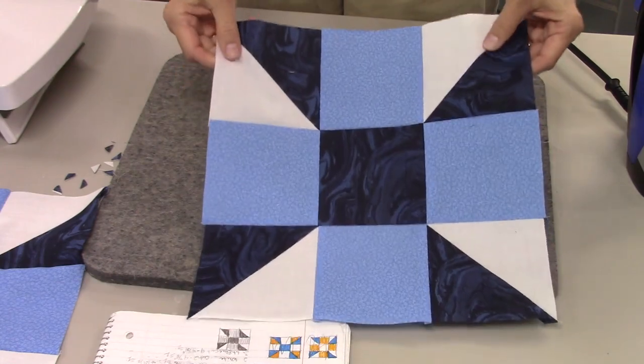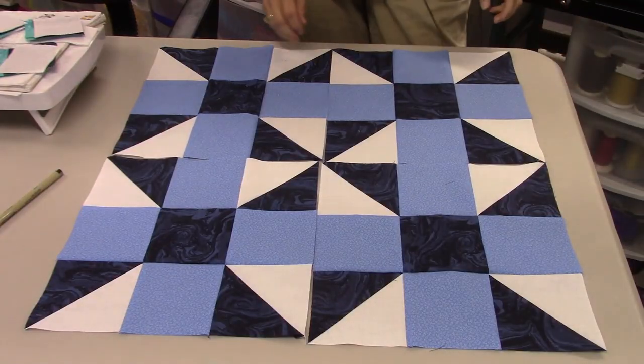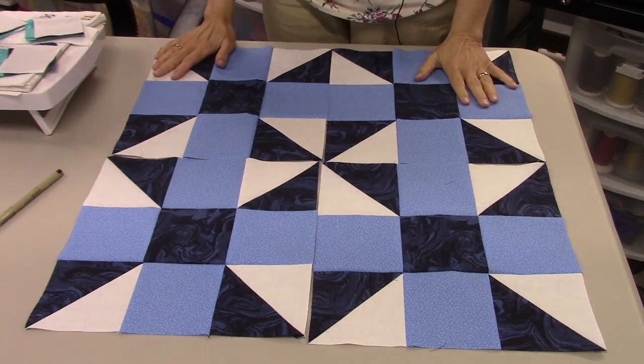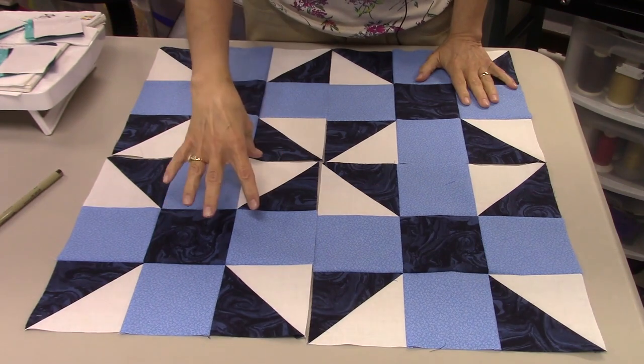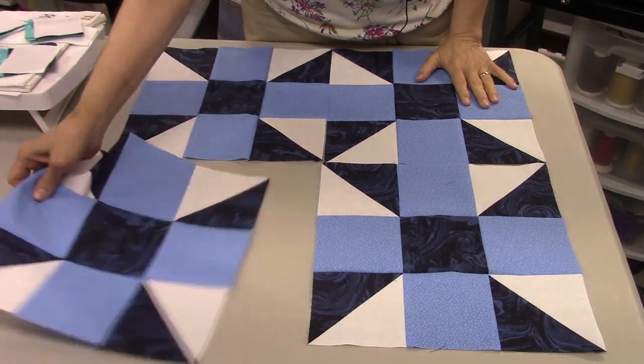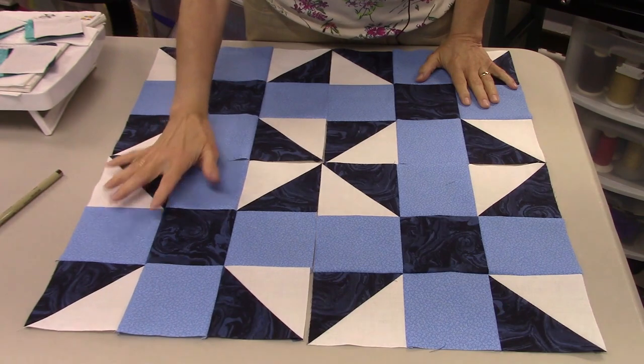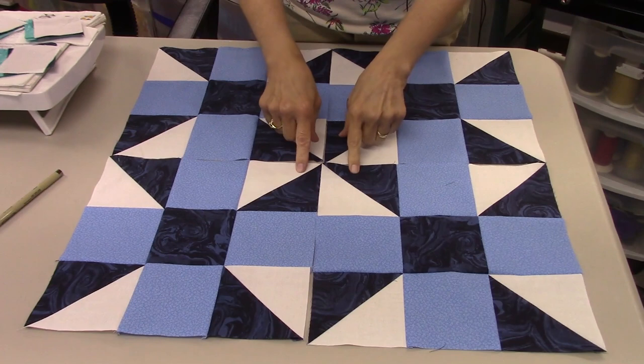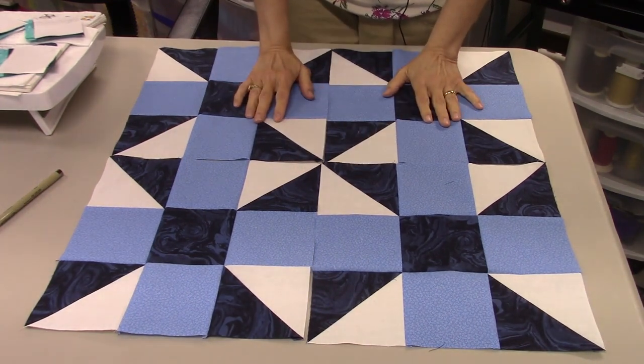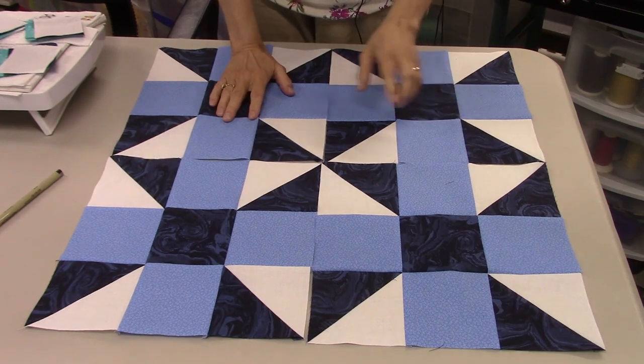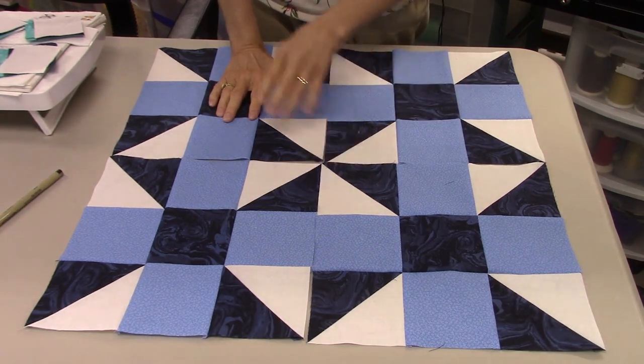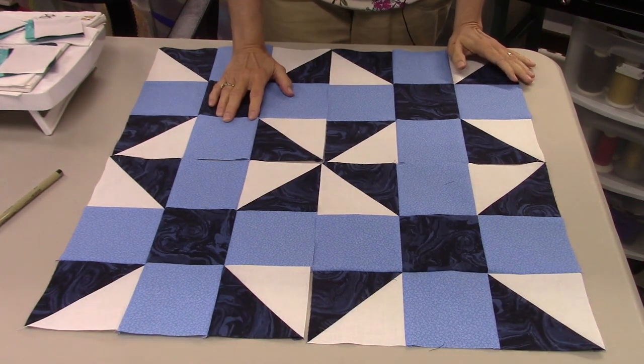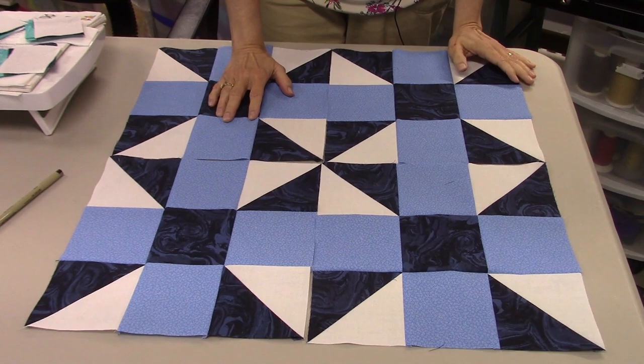Here is the Calico block. Here are four of the blocks laid out side by side, and this is another one of those that if you turn the blocks you don't get any different pattern, it's the same. You will notice that four blocks coming together make a pinwheel in the center. So if you make these blocks into a quilt you will have some pinwheels as secondary designs. I think that's interesting. So that is it for the Calico Puzzle block.